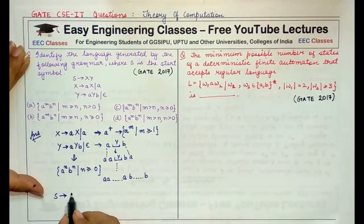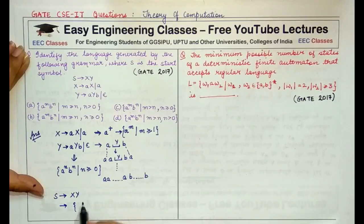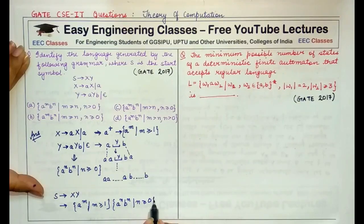Since S is forming this language and it is being formed by XY, we can say it is being formed by A to the power of M such that M is greater than equal to 1 followed by A to the power N such that N is greater than equal to 0.